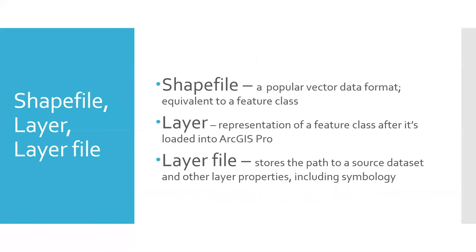A shape file is the file you'd get from somebody else sharing their vector data — it's equivalent to a feature class. A 'layer' is what we call a feature class once it's loaded into your GIS — kind of like calling water 'ice' when it's solid. So you have a feature class, you load it into your GIS, and then it's referred to as a layer. And then there's a 'layer file' — which sounds like it should be what a shape file is called, but it's not.